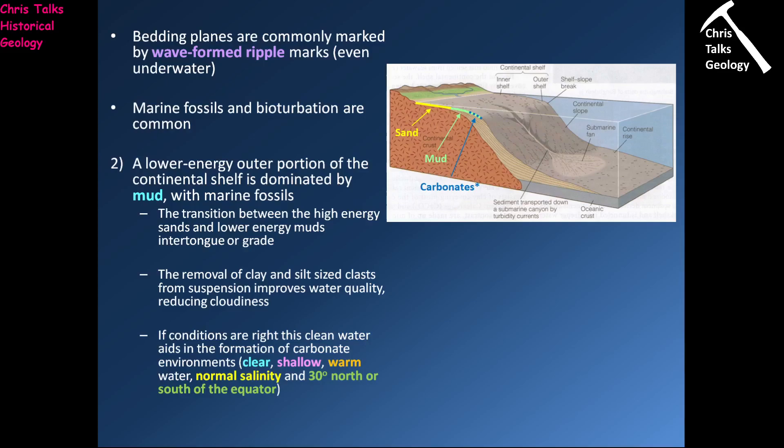What we get is a very mud-dominated sediment that tends to have laminations. Because the sediment is dropping out slowly, we tend to get these nice fine layers. We're going to have lots of marine fossils, which will tend to be in better condition because the water is nowhere near as active, and we will have lots of bioturbation — lots and lots of burrows.